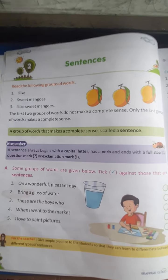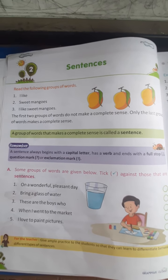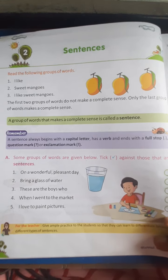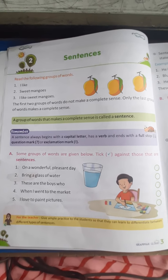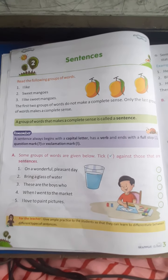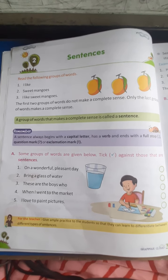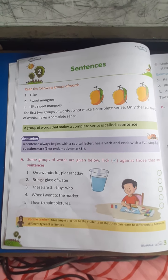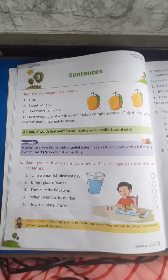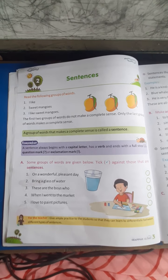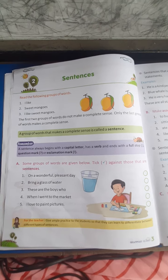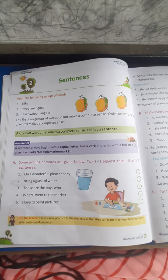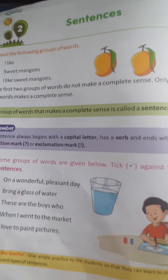Now the question is, how can we identify if this is a sentence or not? Here we will do some exercises by practicing. A sentence is a group of words that makes a complete sense, and it must have a verb. So now come on to the exercise.